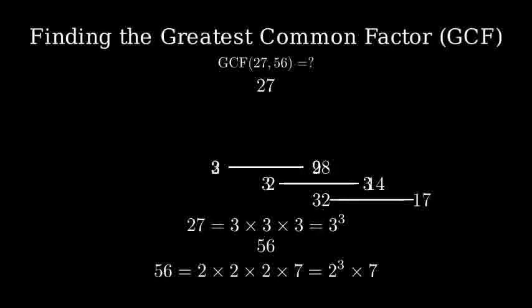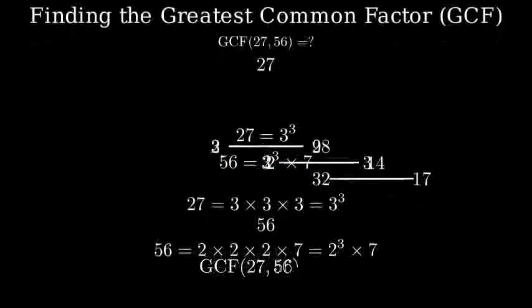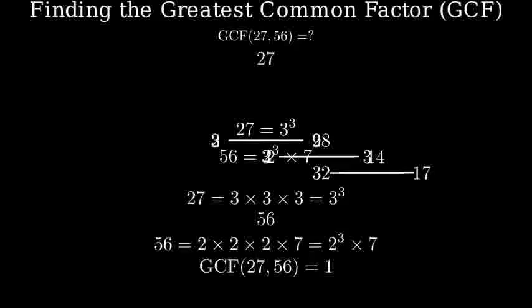Now, to find the greatest common factor, we need to look at the prime factors that both numbers share. Twenty-seven has only factors of three, while fifty-six has factors of two and seven. Since these numbers don't share any prime factors, their greatest common factor is one.